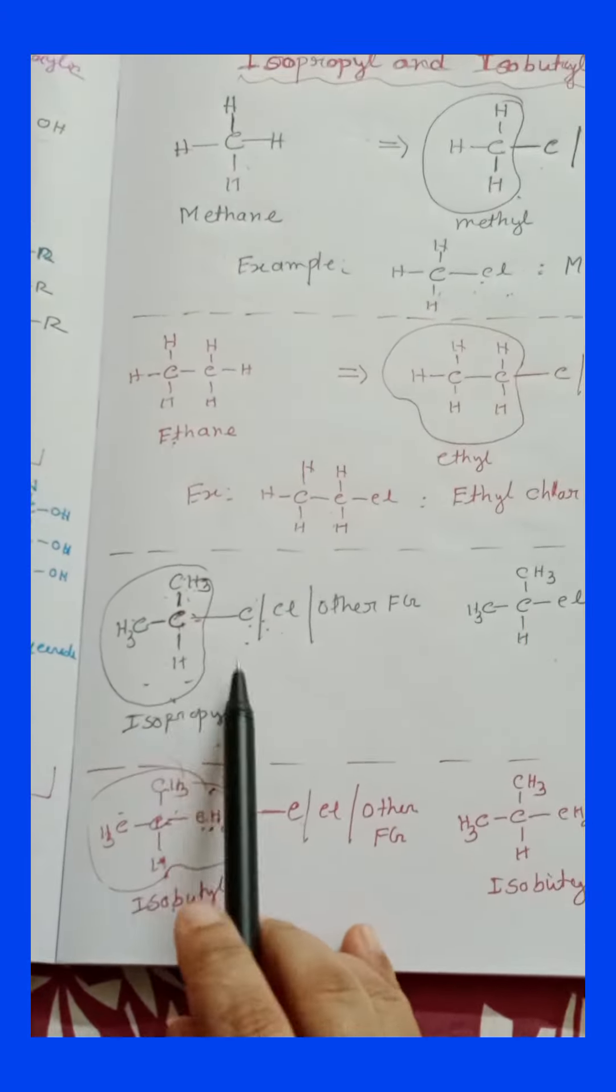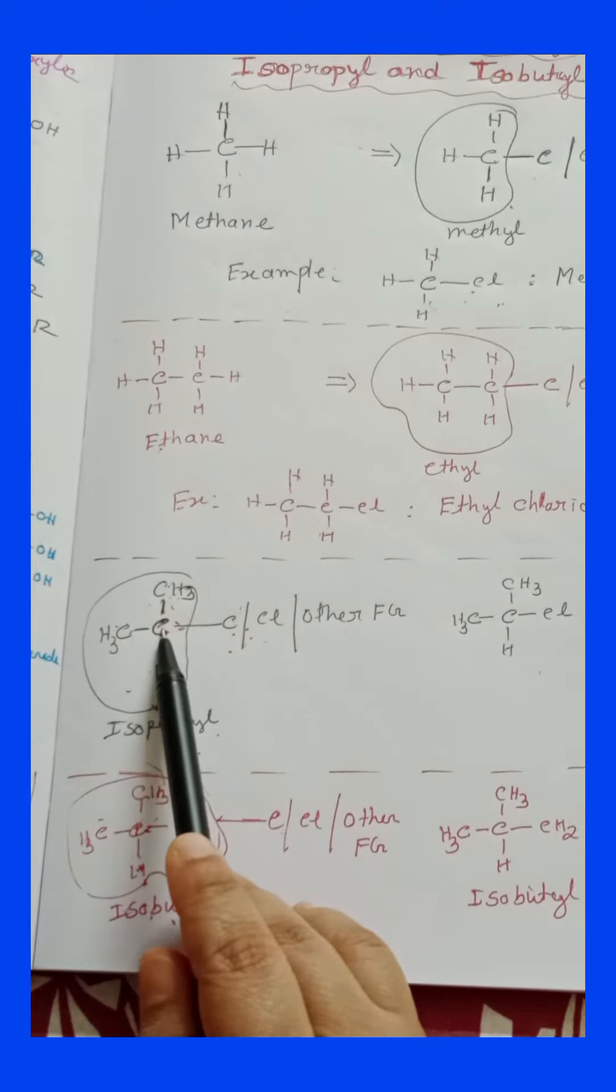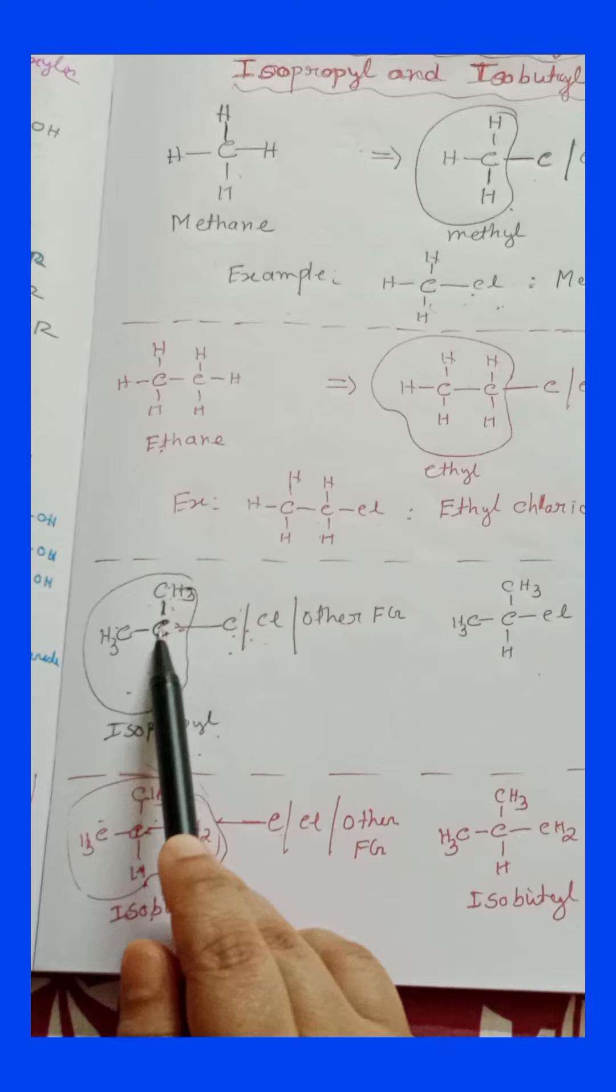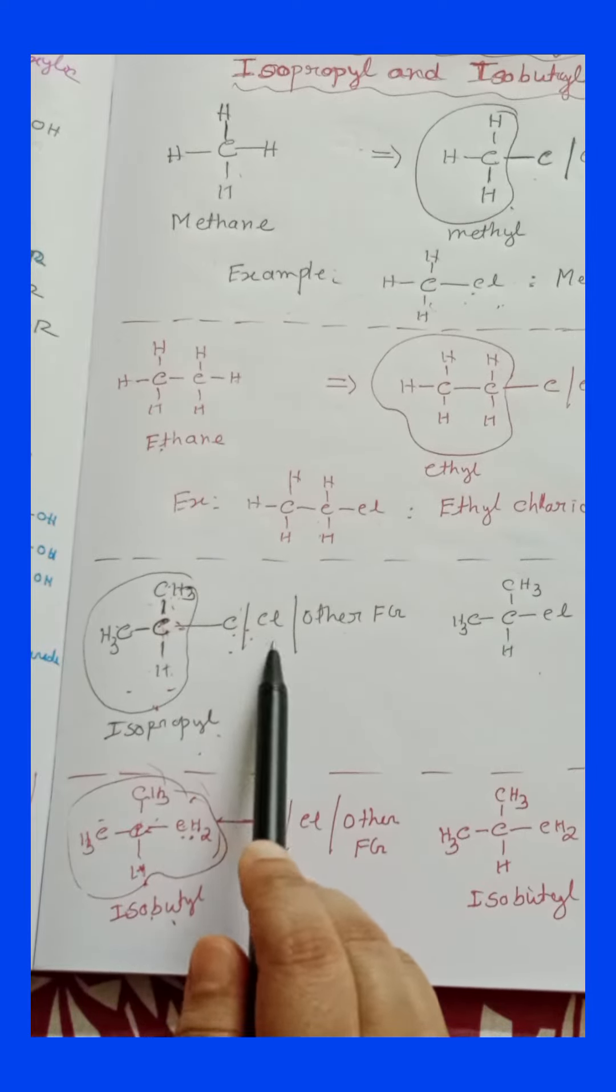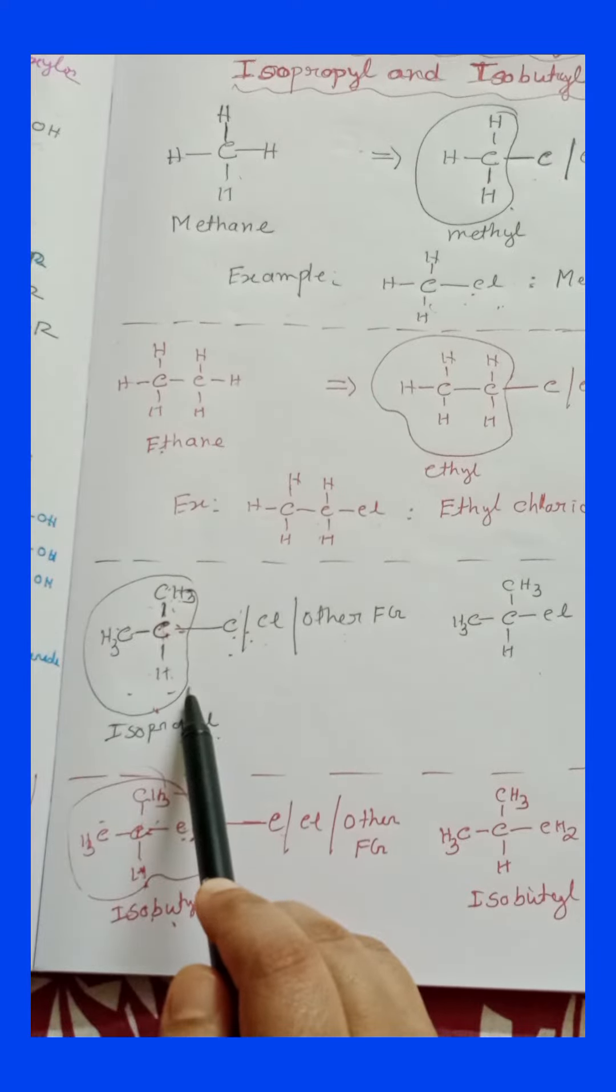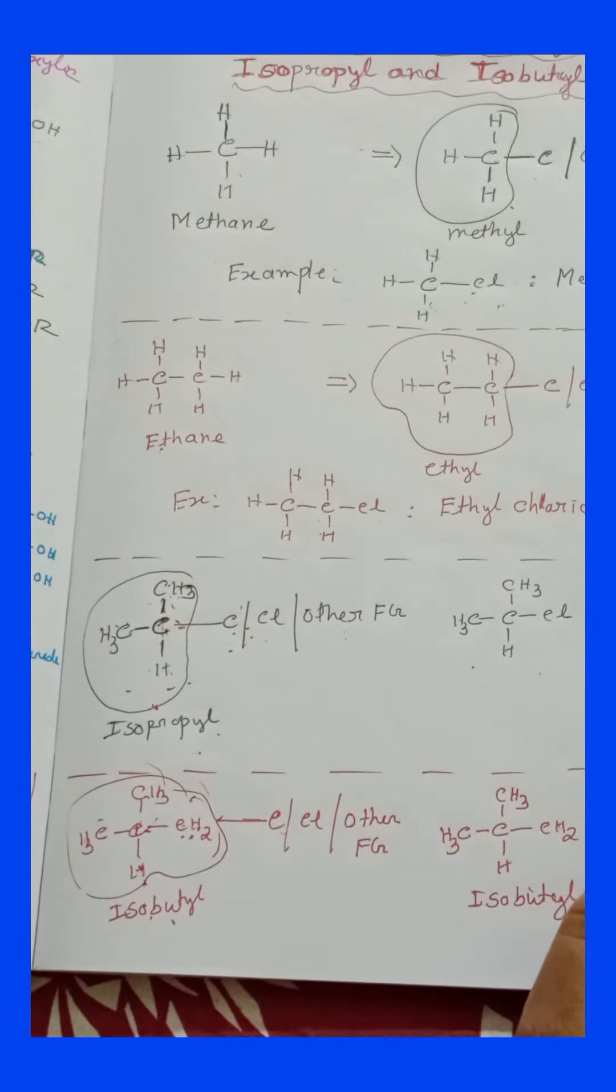Now, let's understand the isopropyl group. When carbon has 2 methyl and 1 hydrogen, and this carbon is connected with another carbon, halogen, or other functional group, this part is called isopropyl. An example is isopropyl chloride.